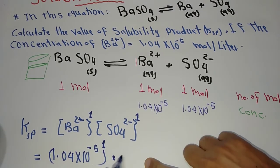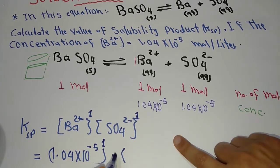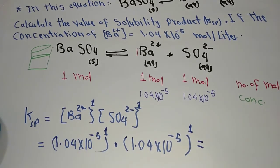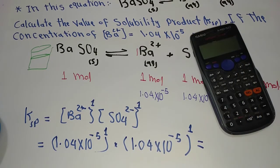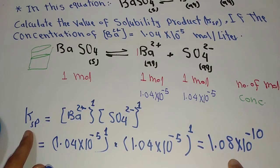And then we can get the result by using the calculator. This is the result of Ksp or solubility product constant.